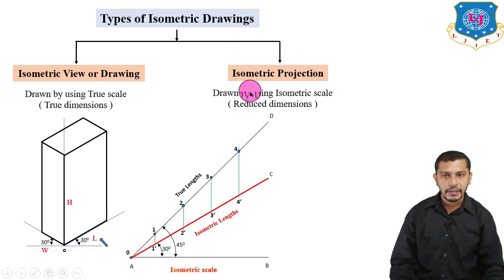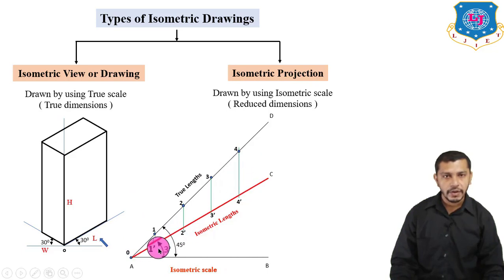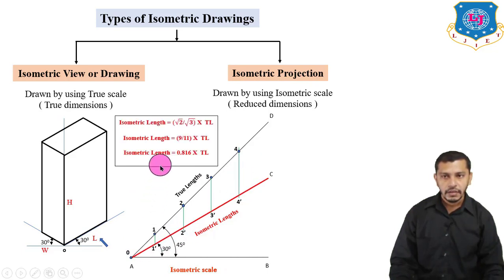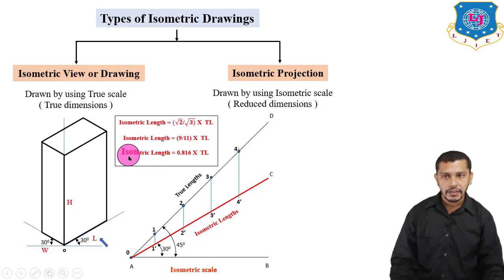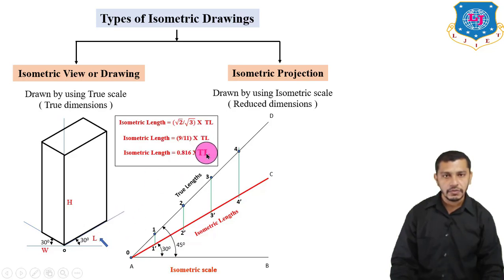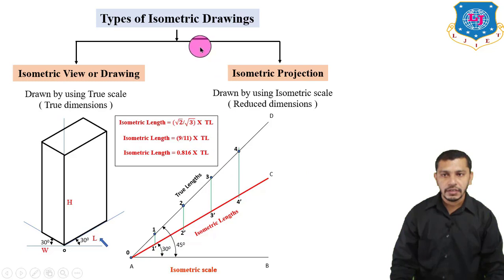To draw isometric projections, first draw the isometric scale. The isometric length equals (√2/√3) × true length, which also equals (9/11) × true length, or approximately 0.816 × true length. That means all dimensions of the object are reduced by a factor of 0.816. So the length of the cuboid in isometric projection will be L × 0.816.